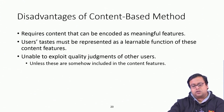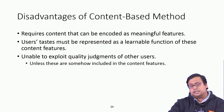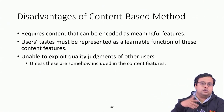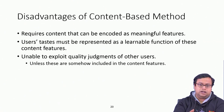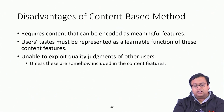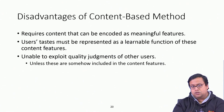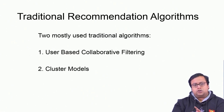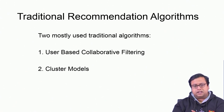Advantages of content-based filtering: no need for data from other users, able to recommend to users with unique tastes, able to recommend new and unpopular items — no first-rater problem — and explanations can be provided for why an item was recommended. Disadvantages: not all content can be encoded as meaningful quantitative features, and user preferences must be representable as a learnable function of those features. Also, quality judgments from other users are not exploited.